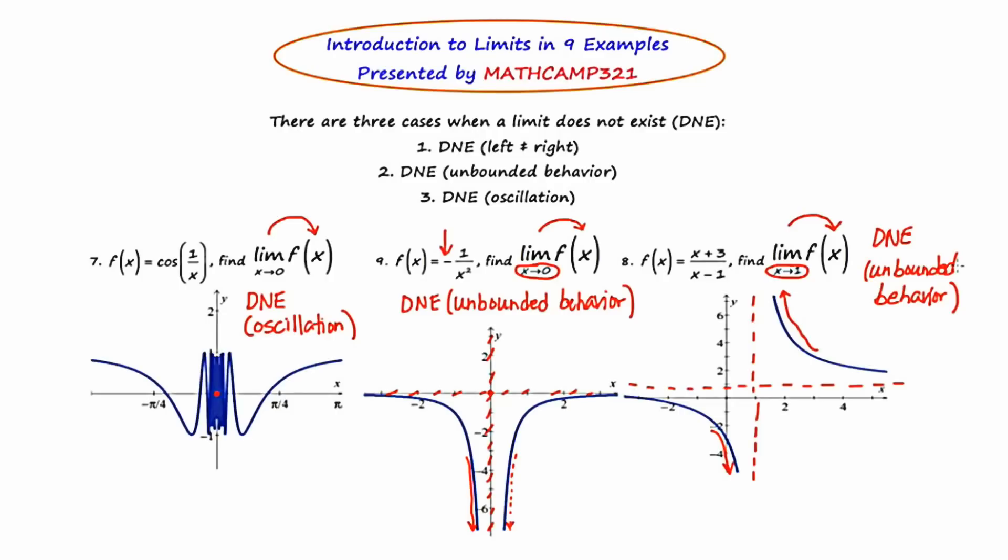And another thing that I'd like to stress is that a limit question is asking about what the y-values are doing. So your answer always has to be reflecting what the y-values are tending toward. And the last thing that I'd like you to keep in mind is that not every limit question has an answer. Sometimes the answer is DNE, and that is that the limit does not exist. And when this is the case, you have to specify for which reason it does not exist: left does not equal right, unbounded behavior, or oscillation. I hope this video has helped.